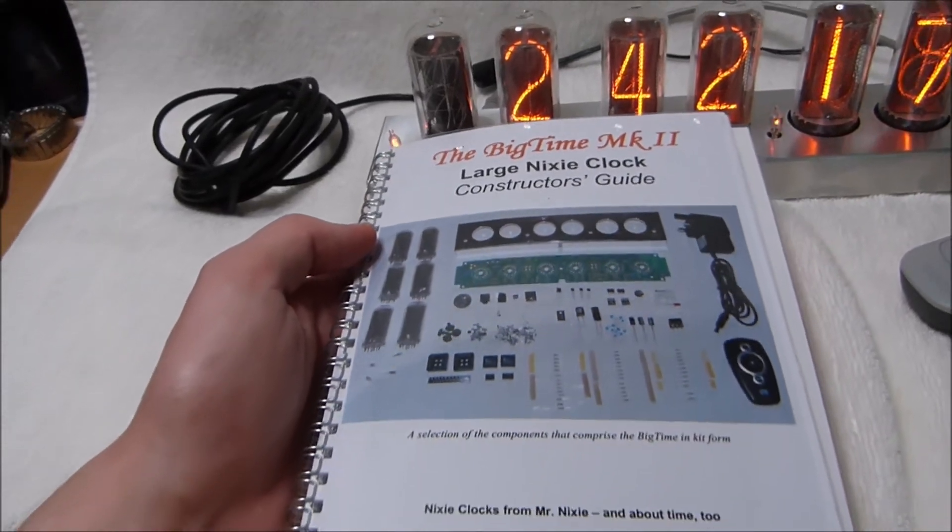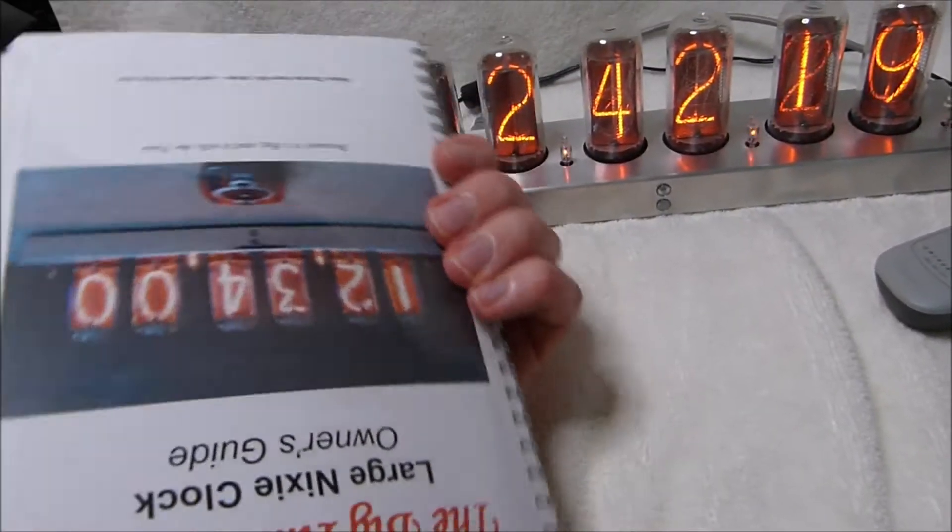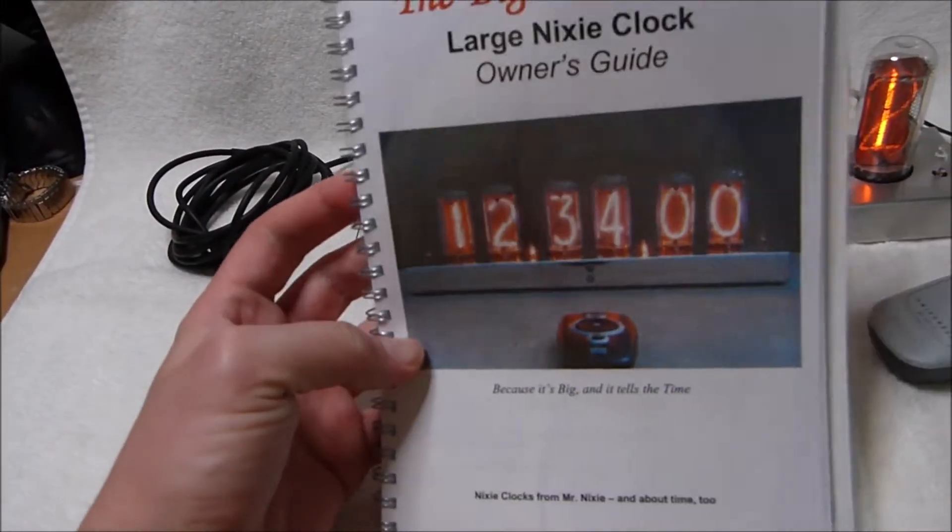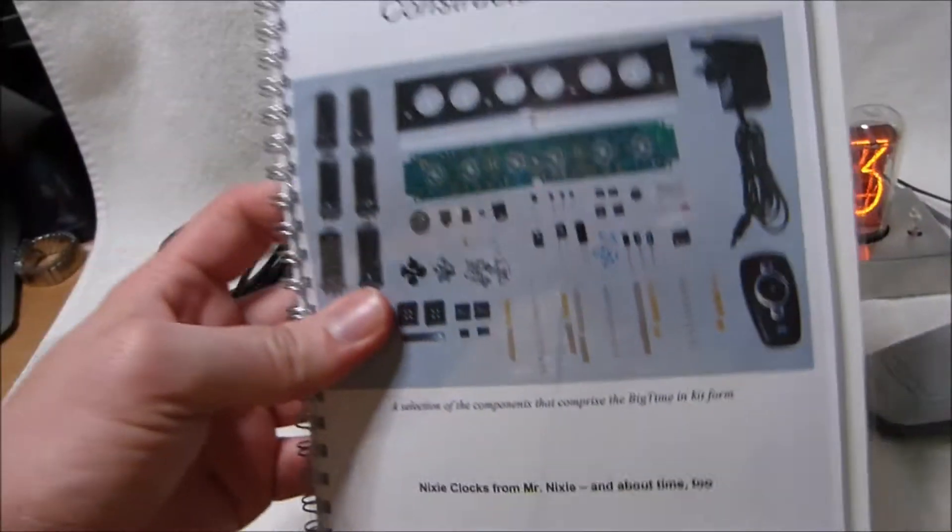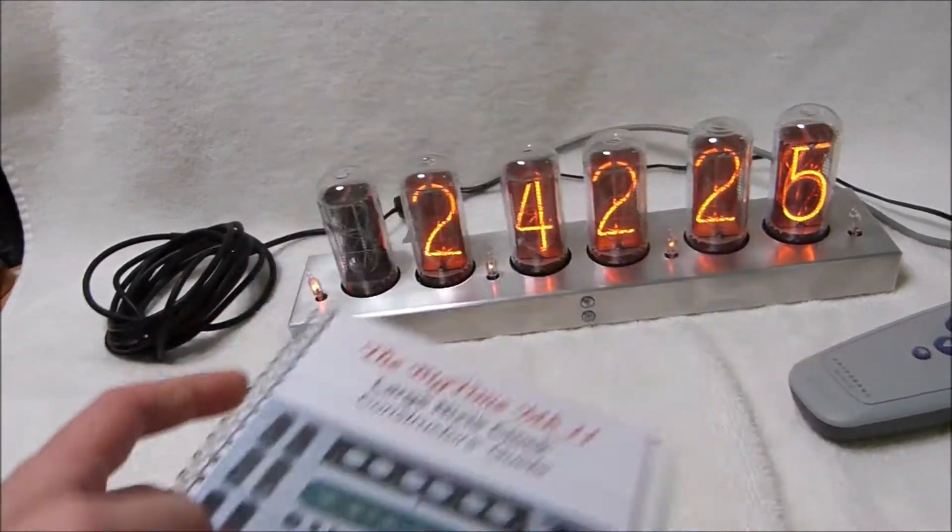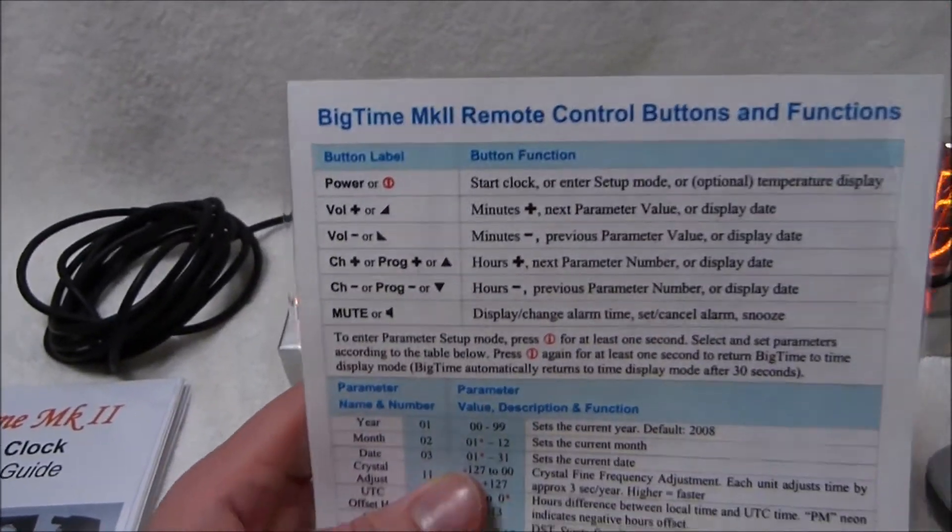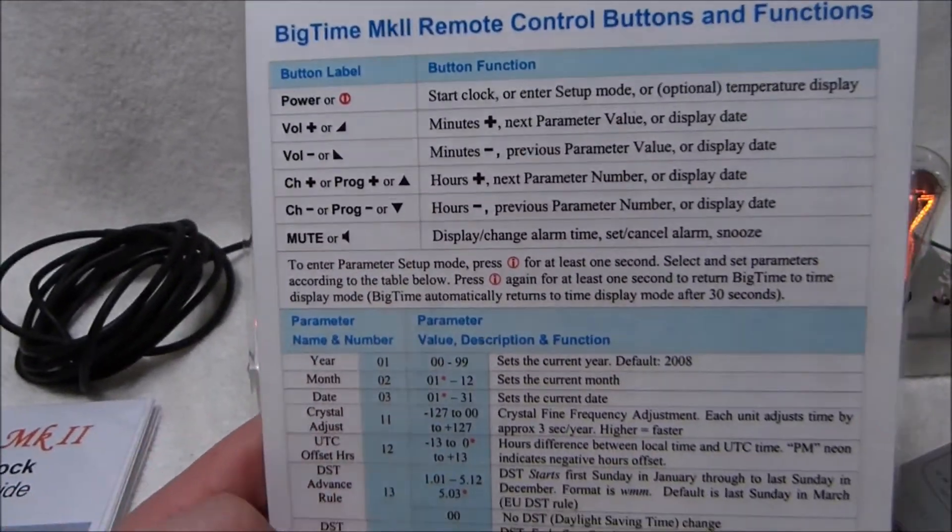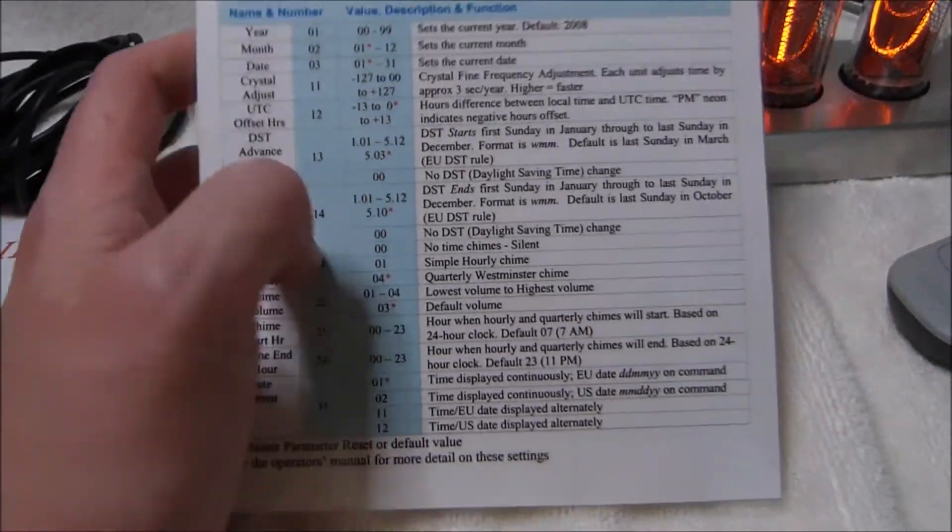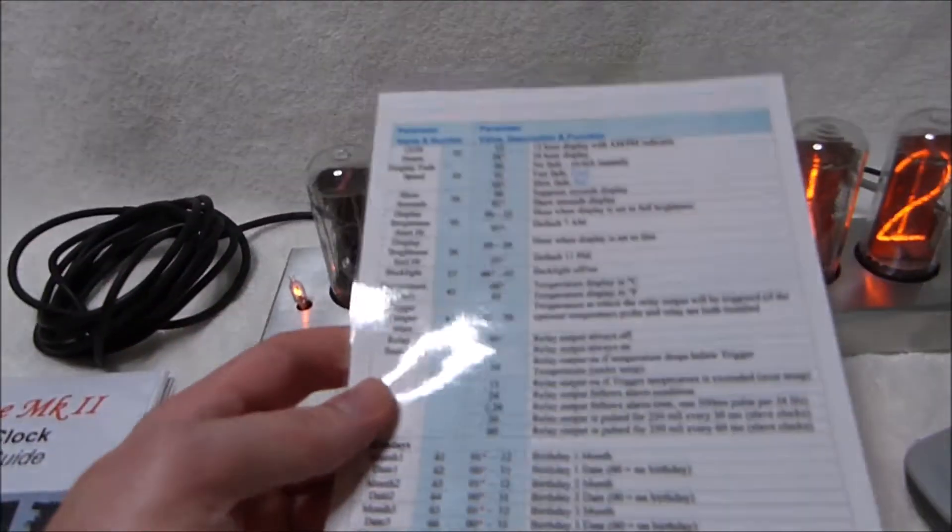Here's the manual and constructor's guide for the clock. This side's the owner's guide, and then the other side is the constructor's guide. There's also this laminated quick reference guide. It shows you how to use the remote control and what all the parameters are in the settings menu.